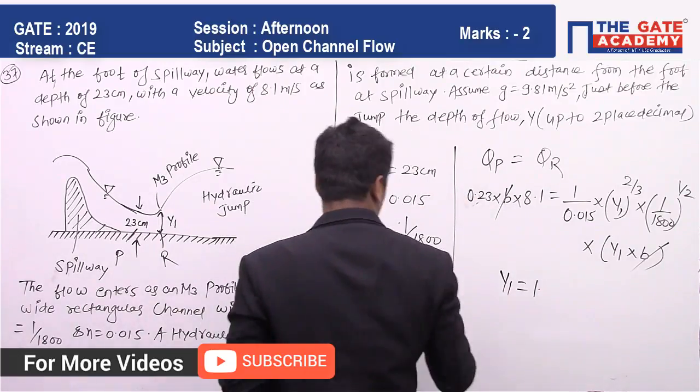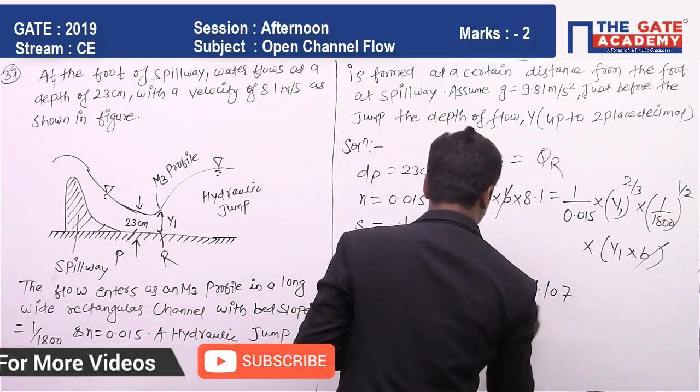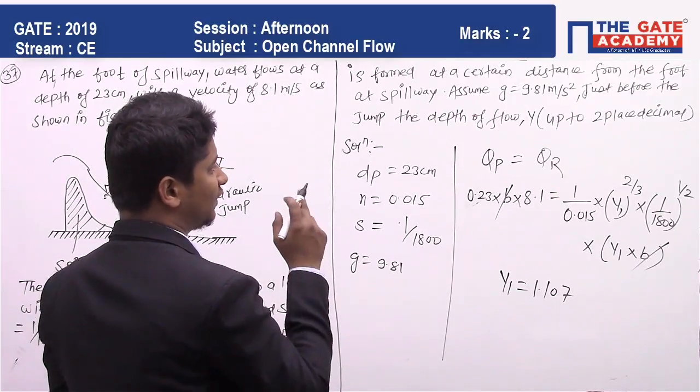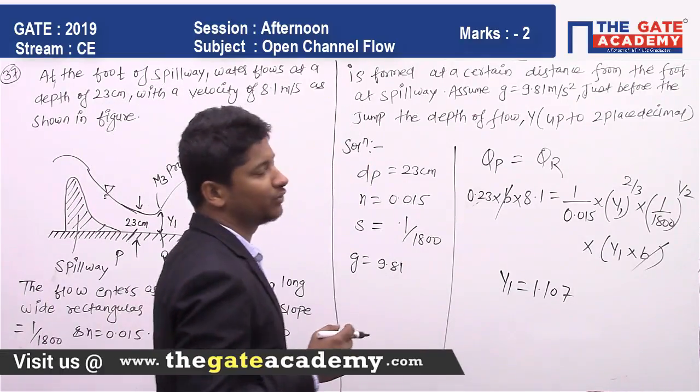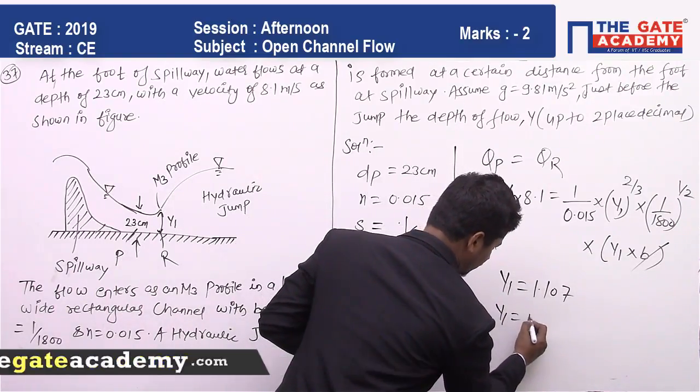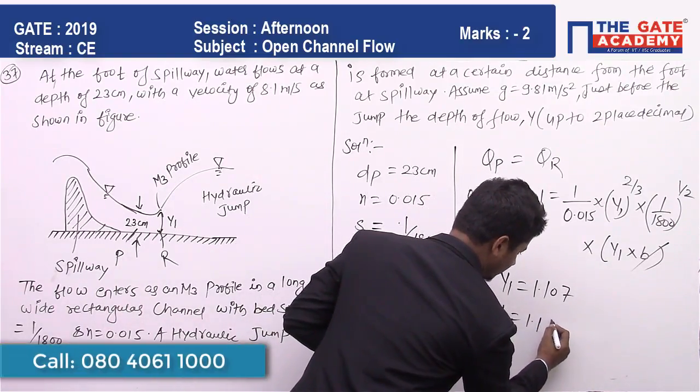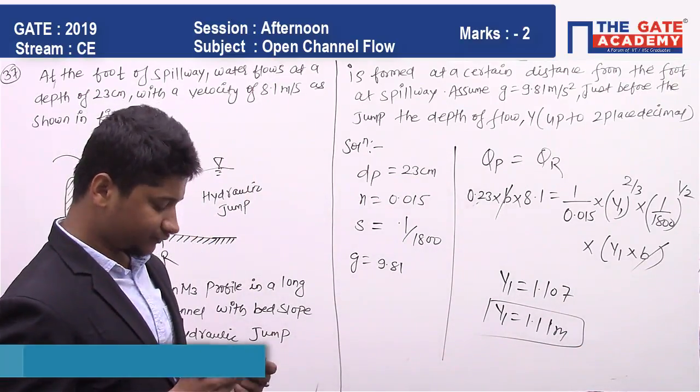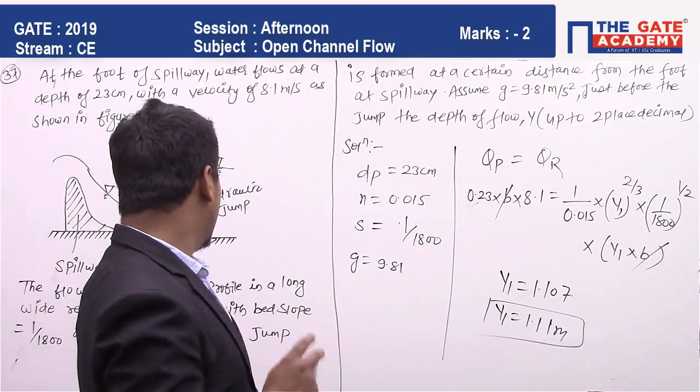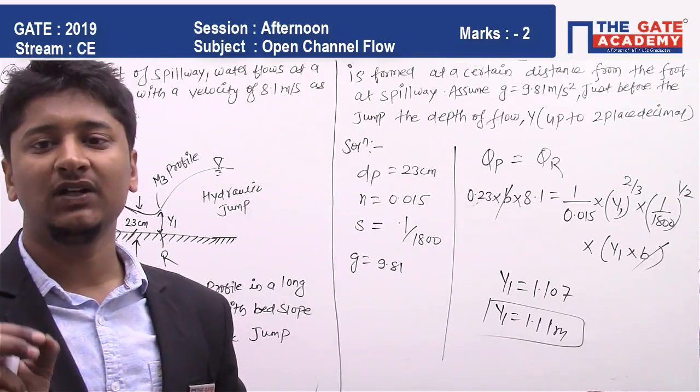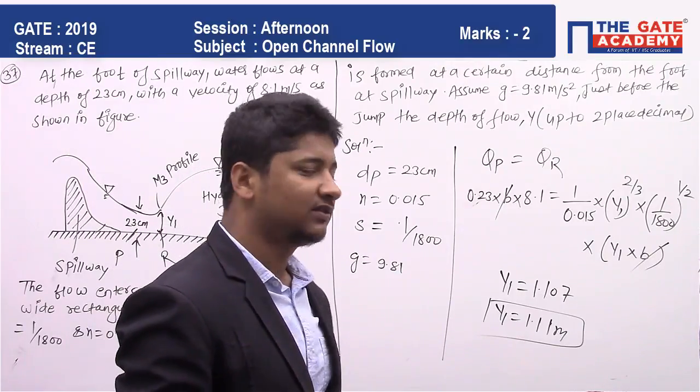They are asking the question up to two decimal places, so it will be Y1 = 1.11 meters. So just before the hydraulic jump occurs, the depth is 1.11 meters.